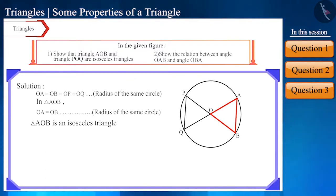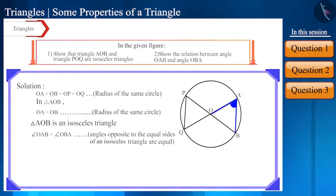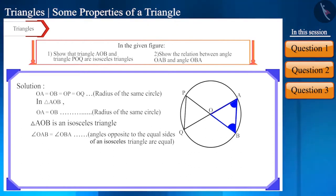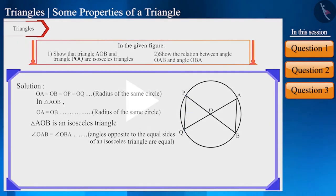Friends, we know that the angles opposite to the equal sides of an isosceles triangle are equal. Therefore, angle OAB will be equal to angle OBA. Similarly, we can also prove triangle POQ to be an isosceles triangle. Pause the video and try to prove it yourself.